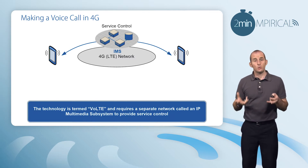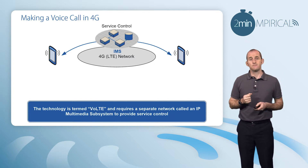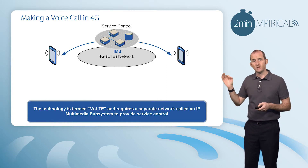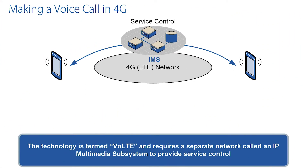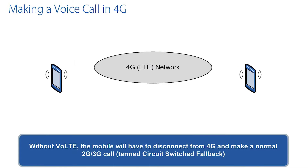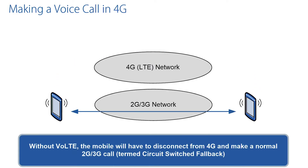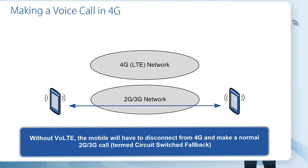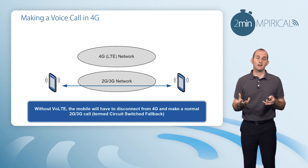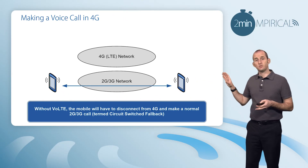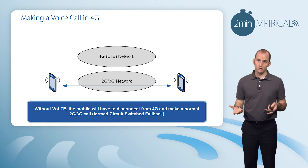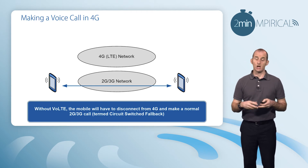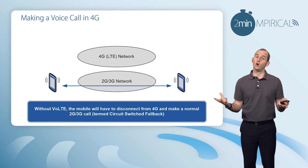Well, what does that mean? If we don't have VoLTE, when a customer wants to make or receive a voice call, we need to push them to 2G or 3G through a system called circuit switch fallback. Using circuit switch fallback, they will leave 4G, enter 2G or 3G, and just make a normal voice call.